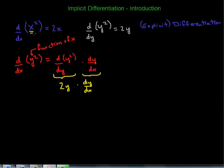Before, we had an expression explicitly in terms of x and took the derivative with respect to x — that's the ordinary derivative. Even if we have y's and take the derivative with respect to y, that's the ordinary derivative; we just apply the power rule. It becomes implicit differentiation if we have an expression with y's, or x's and y's, and we're taking the derivative with respect to another variable. Let's give ourselves one more example to illustrate this.